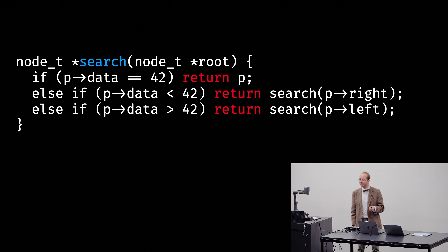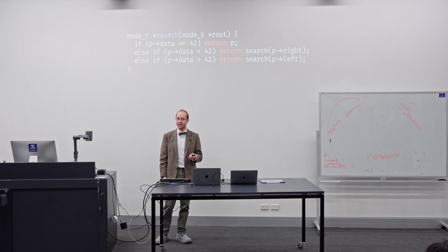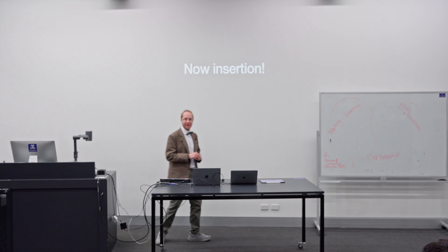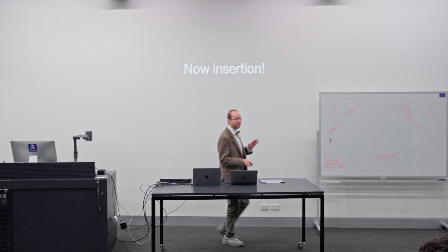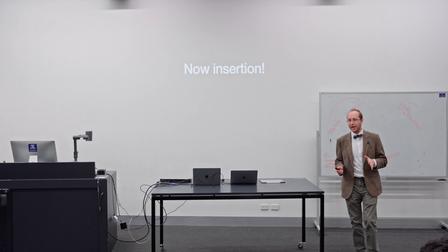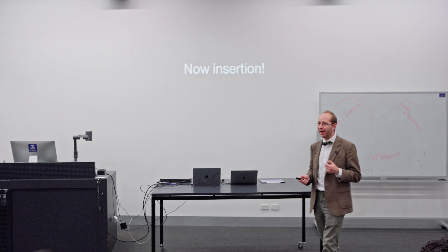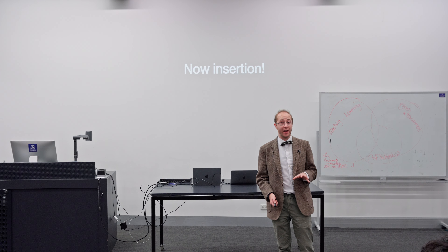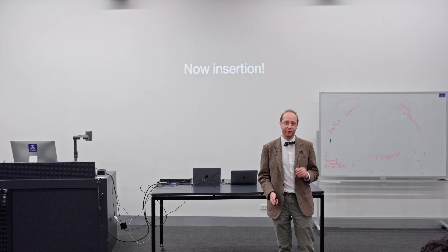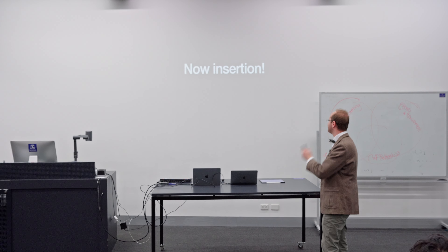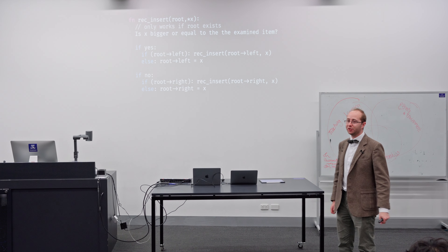That was our easiest case: traversal. Now things get a little more difficult — we're talking about insertion and then deletion. Deletion is the hardest one, so hard that in other versions of the course it hasn't even been taught. We could only add things to our binary search tree. So how does insertion work?